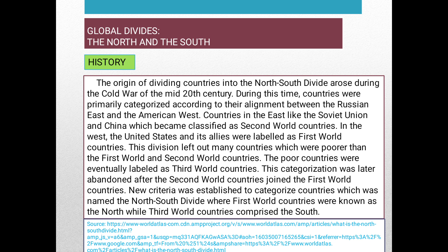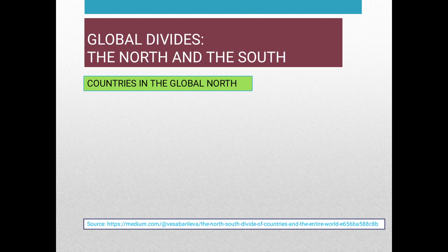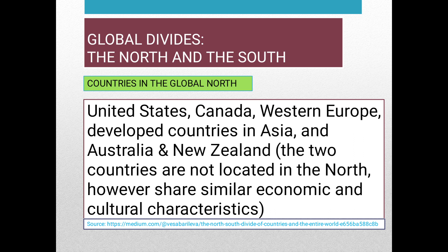This categorization was later abandoned after the Second World countries joined the First World countries. New criteria was established to categorize countries, which was named the North-South divide, where First World countries were known as the North, while Third World countries comprise the South. The Global North includes the United States, Canada, Western Europe, developed countries in Asia, and Australia and New Zealand. The two latter countries are not located in the North, however, they share similar economic and cultural characteristics.